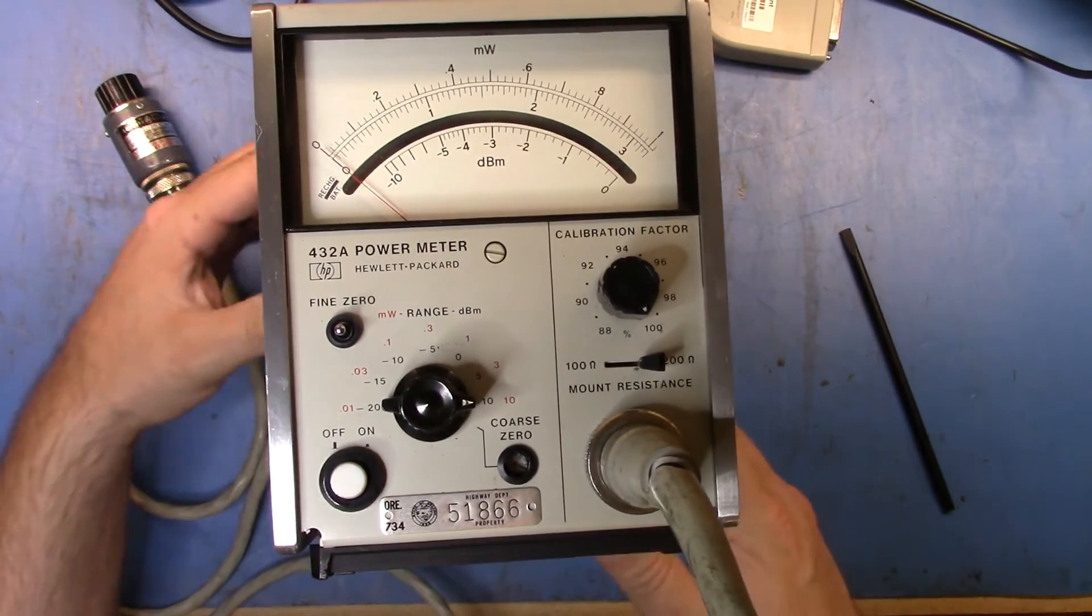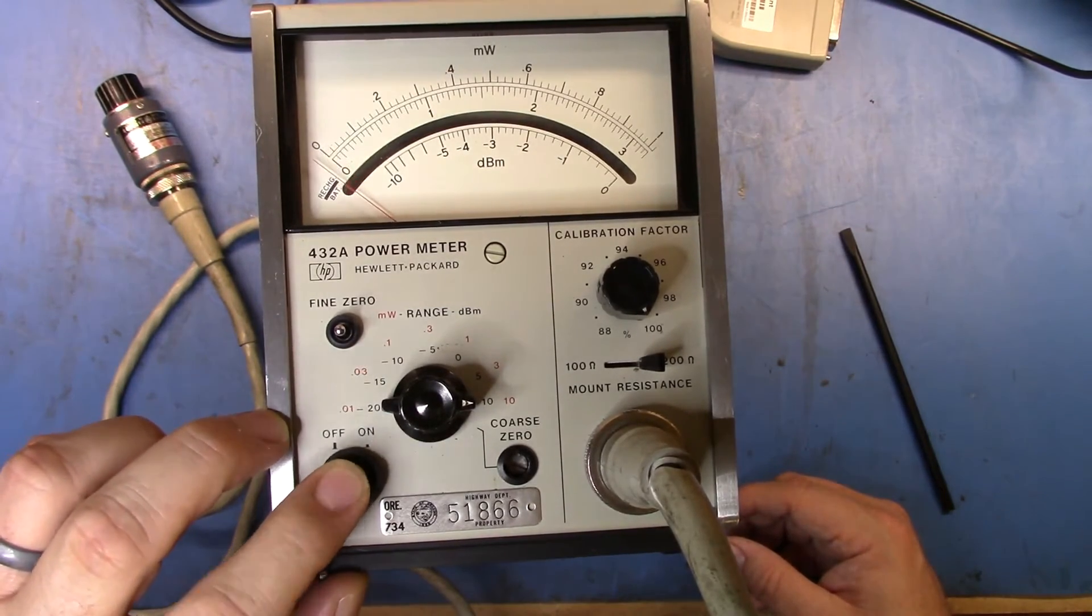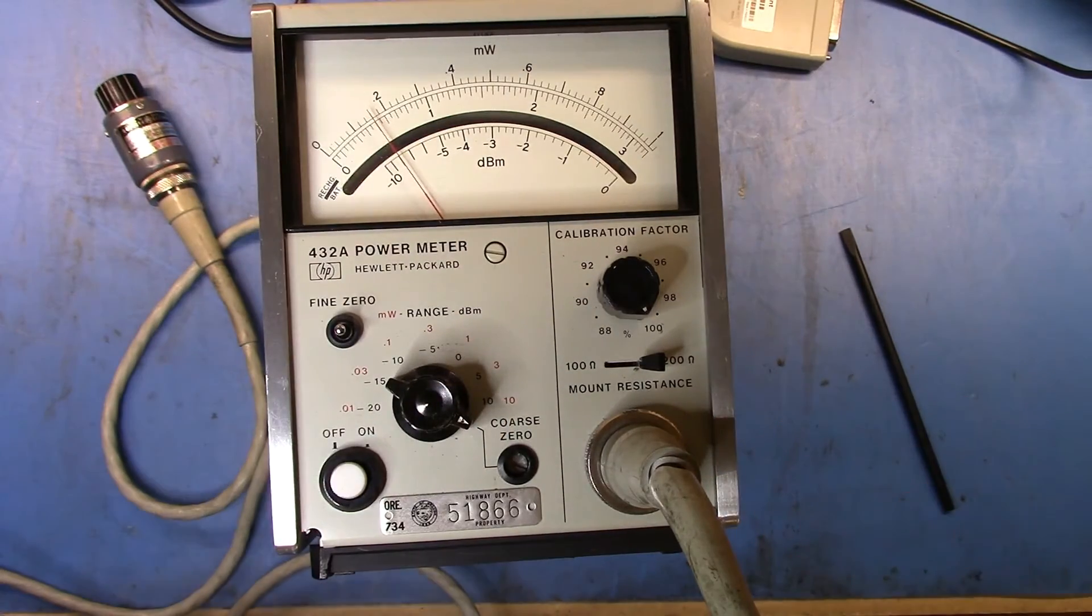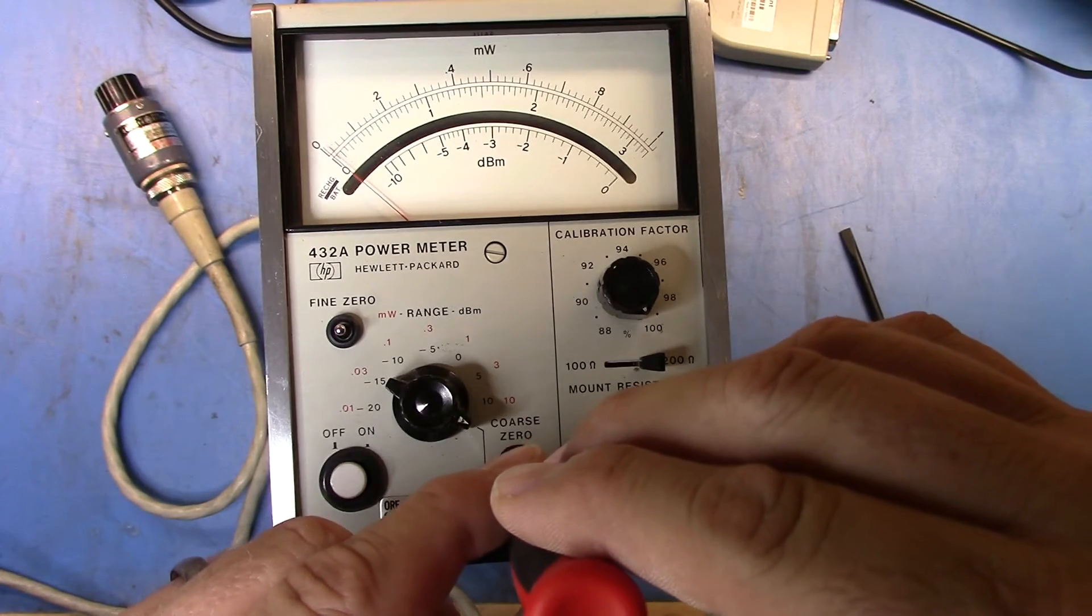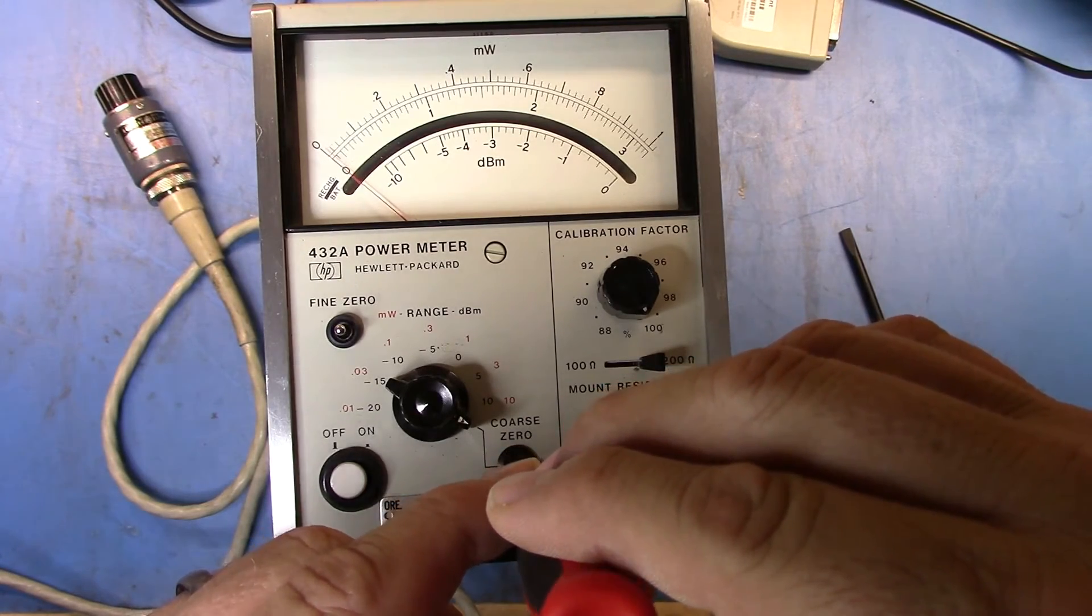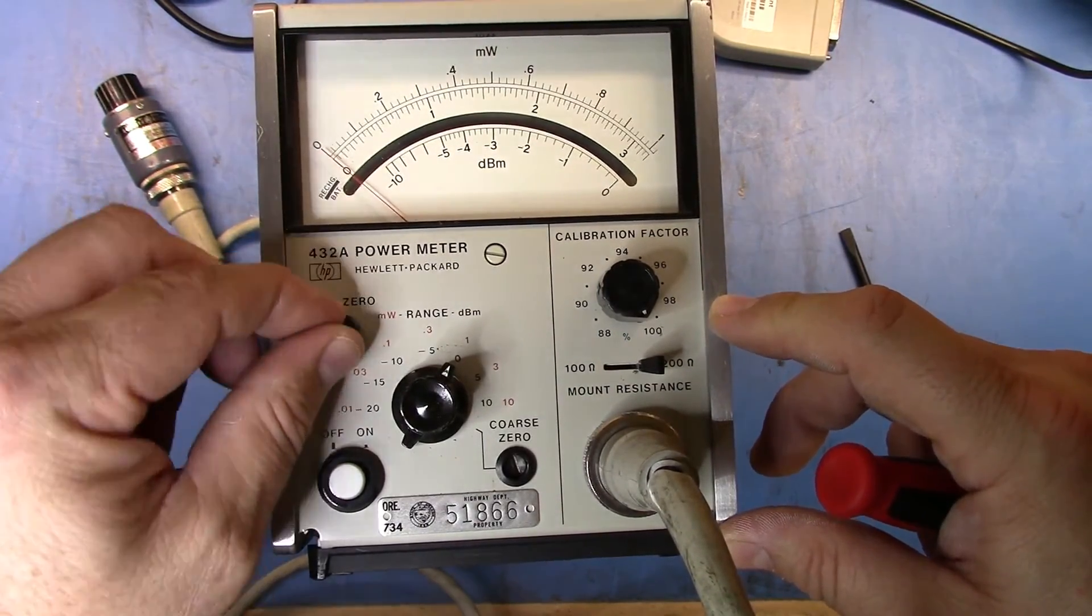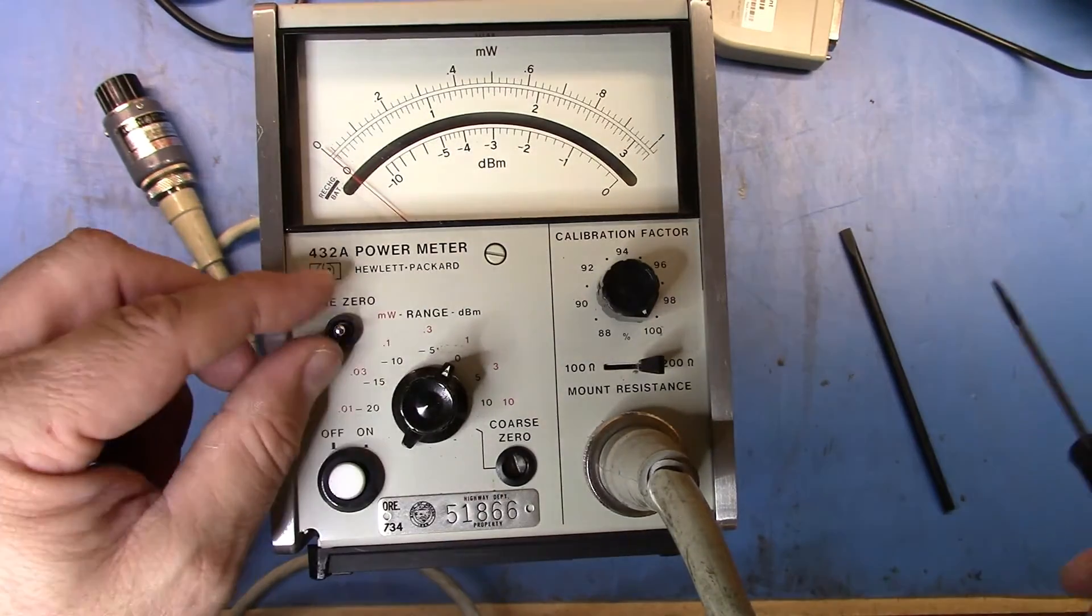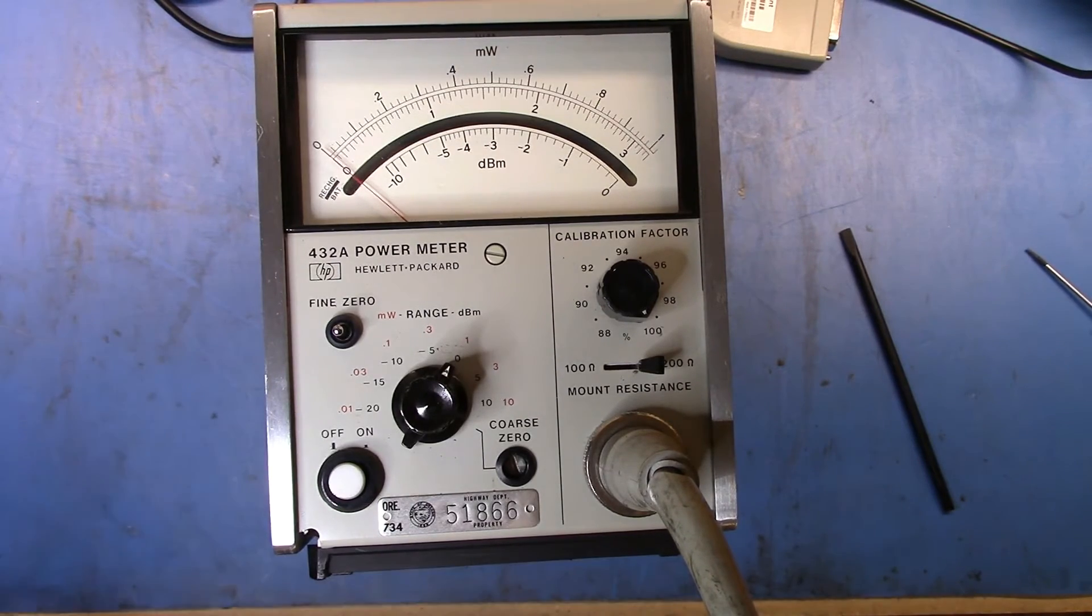Let's turn this on and see what happens. I guess it was on. So now we turn it to coarse zero, and we can zero down the meter to get it in there. Then we set our range and use fine zero to pull that in. Basically, you set the coarse zero, and then at each range change, use fine zero again to zero back in. Now I'm going to connect this to an 8657B.